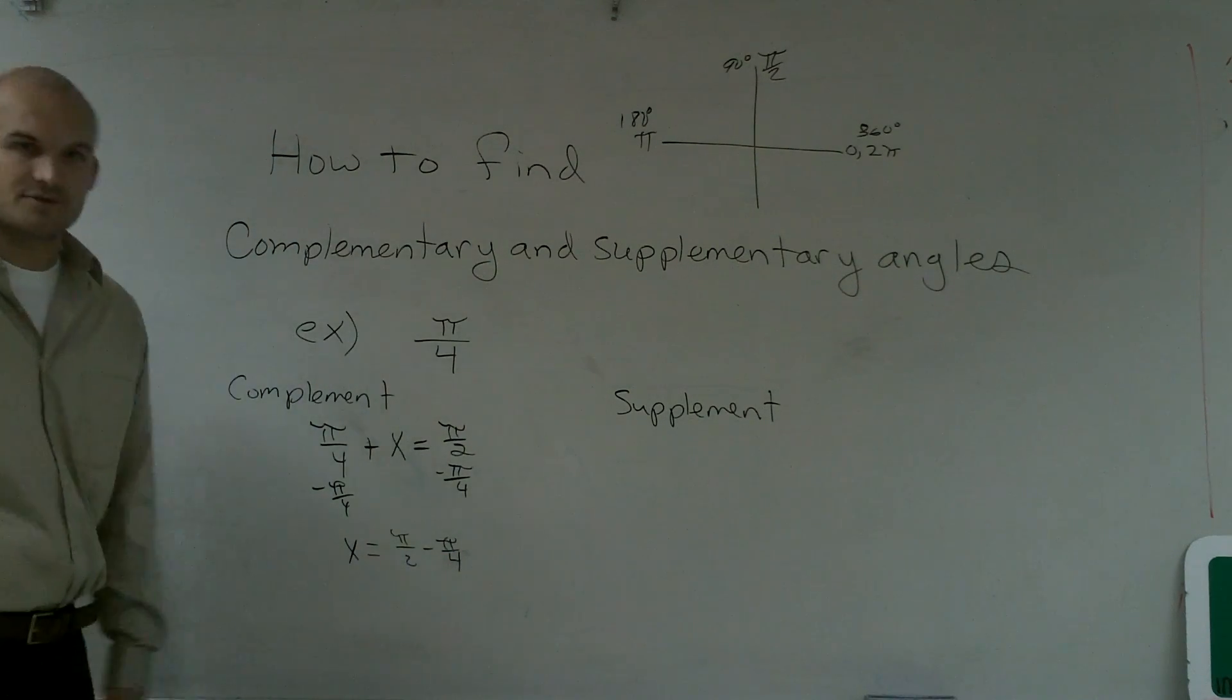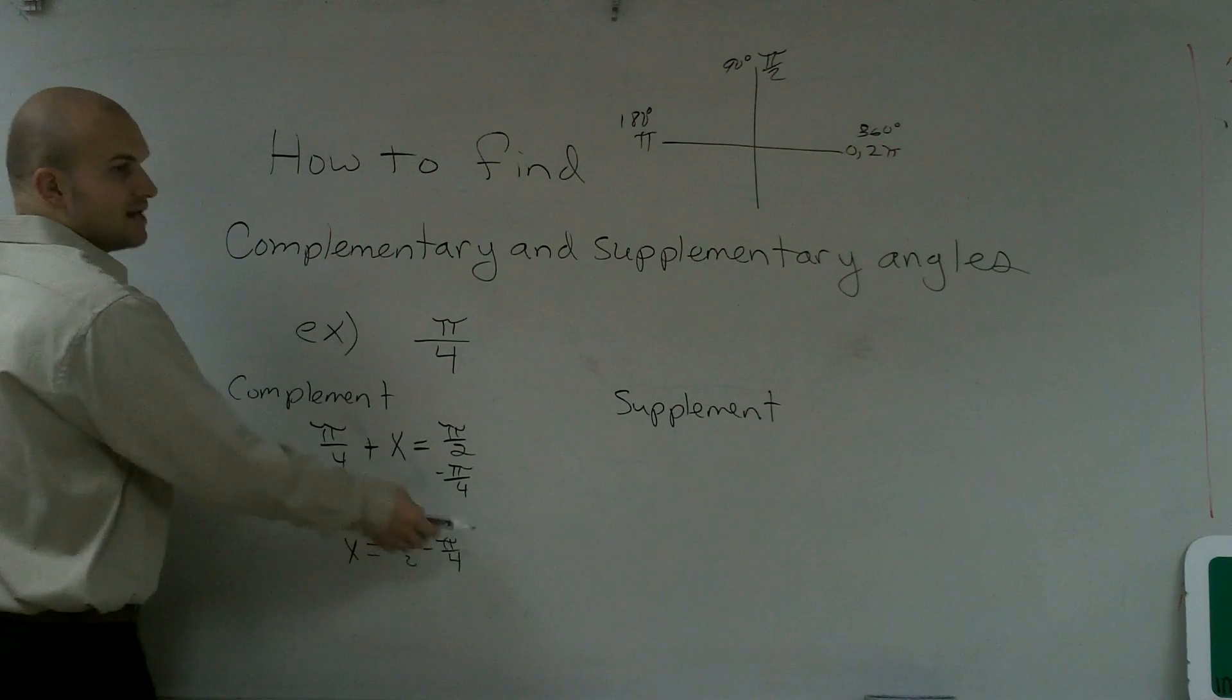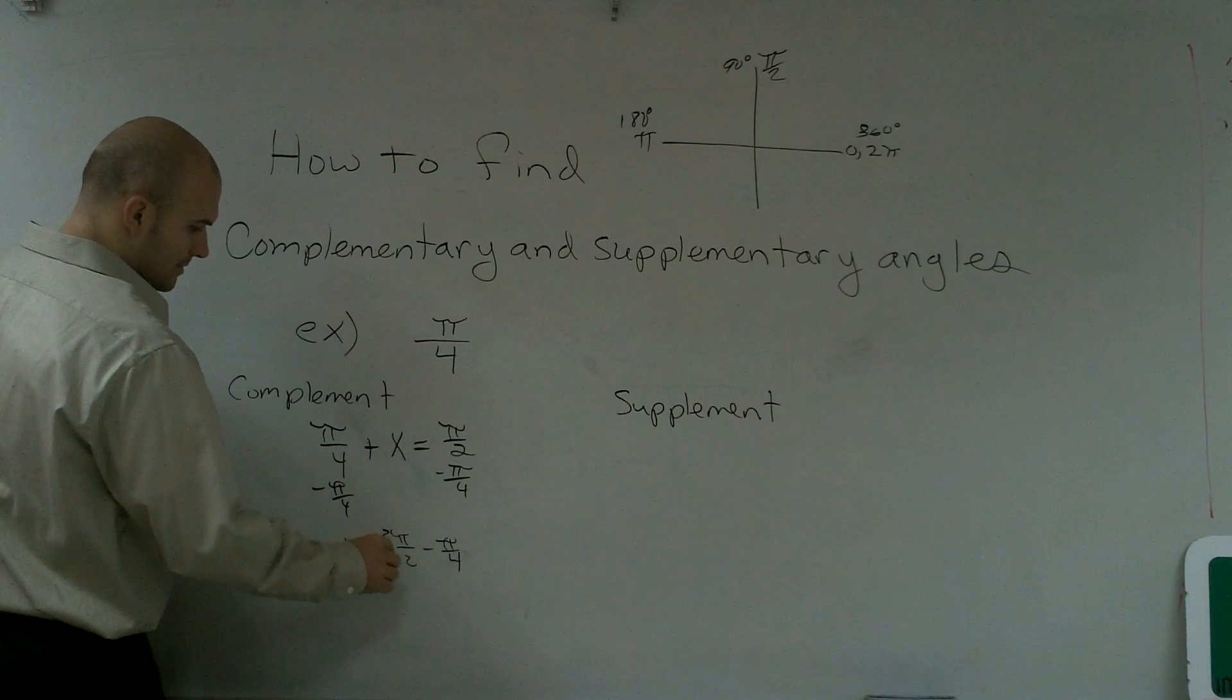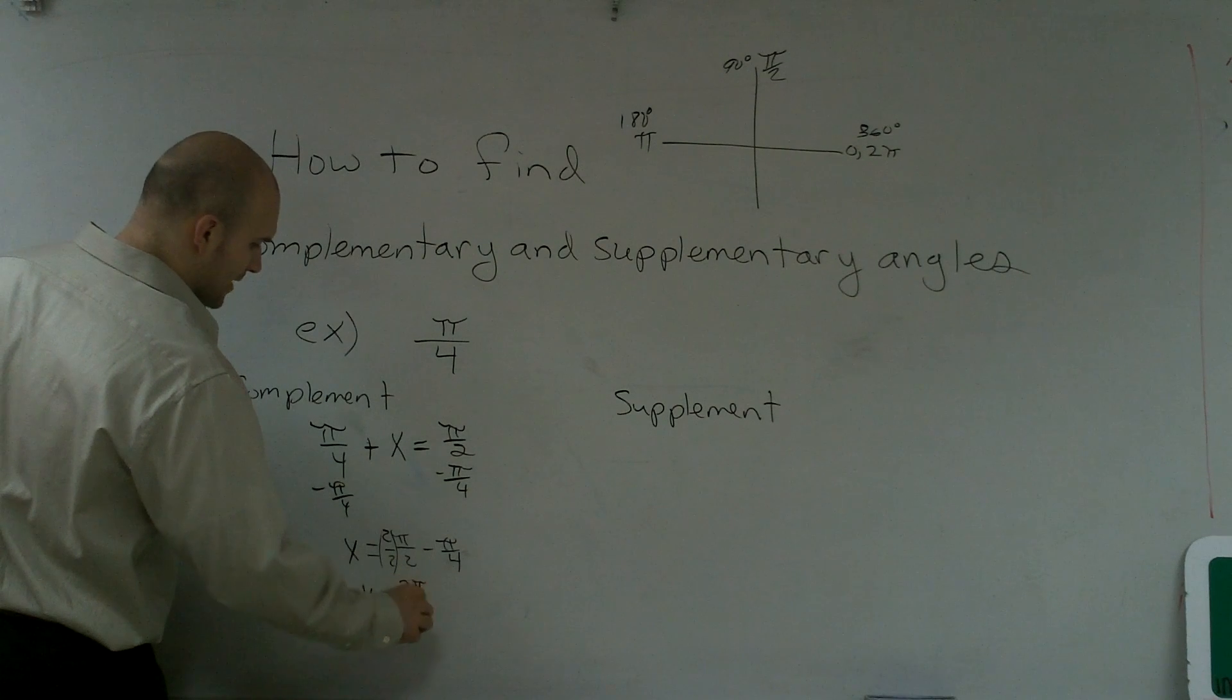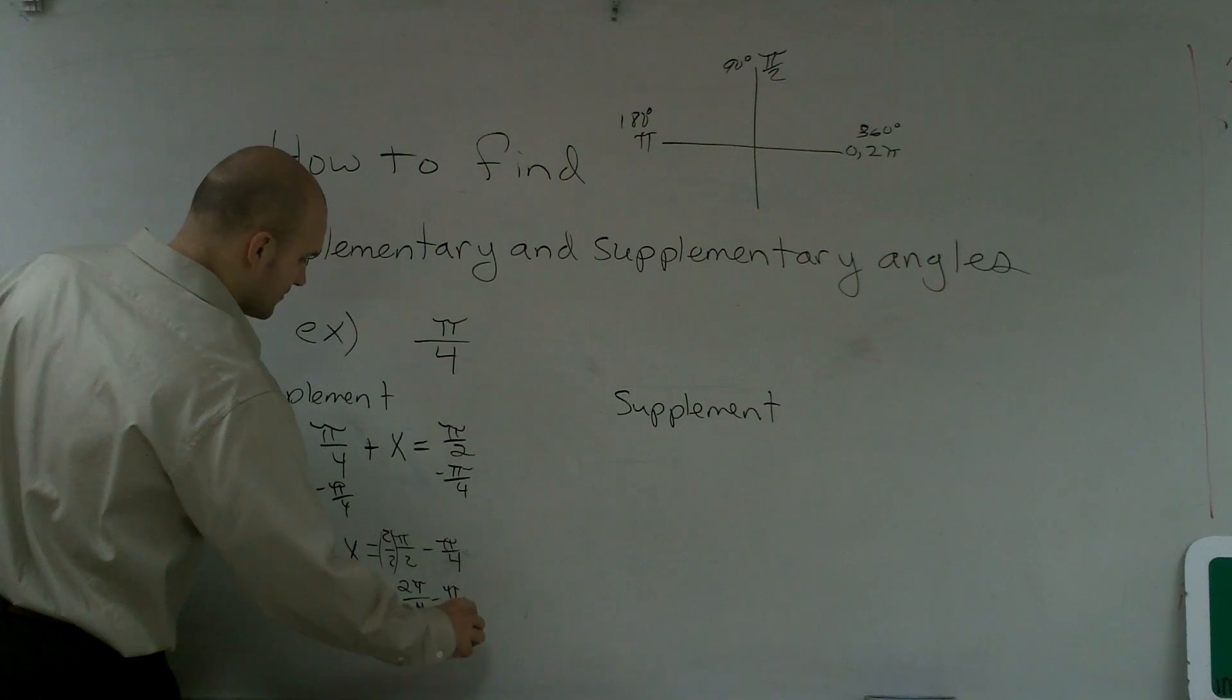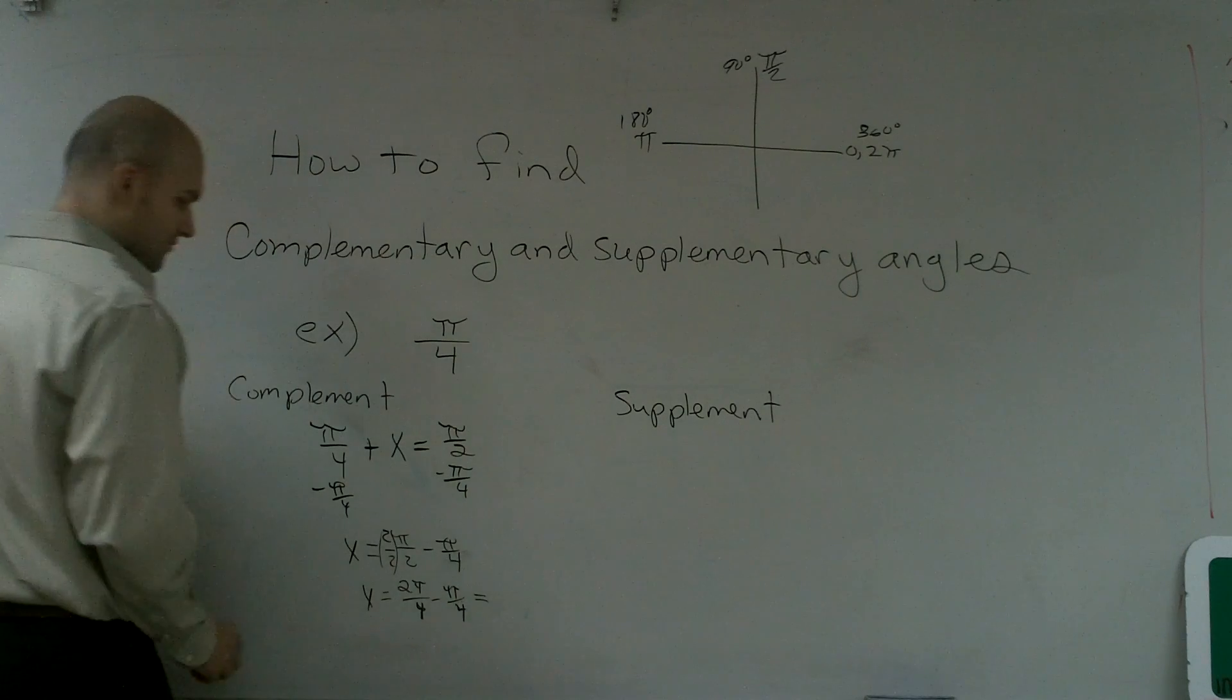And the big mistake that students get with this is literally doing their fractions from algebra 1. Remember, these do not have the same common denominator. So, to get this common denominator, we have to multiply by 2 over 2 on the top. So, I get x equals 2π over 4 minus π over 4, which equals π over 4.